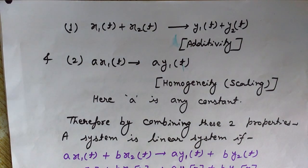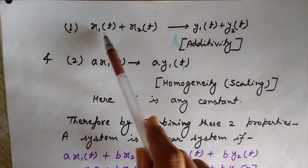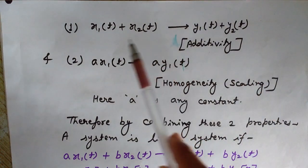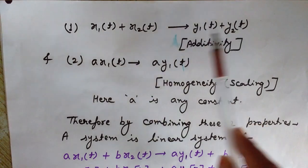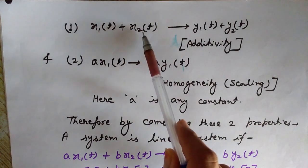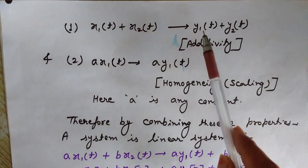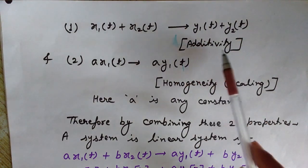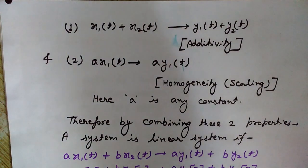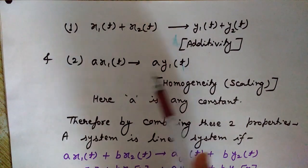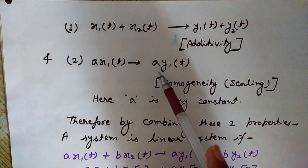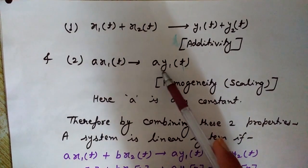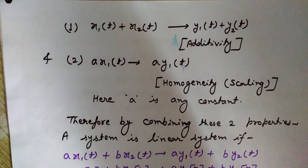The rule of additivity says that if we apply x1(t) plus x2(t), then the output will be y1(t) plus y2(t). It means since we have y1(t) and y2(t) as the outputs to x1(t) and x2(t) respectively, if we add these two inputs, the output will be the addition of the outputs. This is the rule of additivity. The rule of homogeneity, also known as scaling, states that if we apply input ax1(t), then the output will be a·y1(t). If we scale an input by a, the output will also be scaled by a.